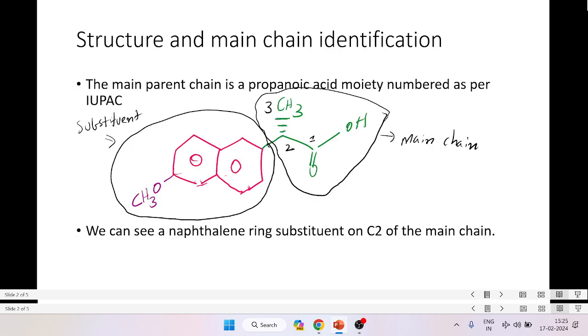So let us look at the structure and identify the main chain. The main parent chain is a propanoic acid moiety, a carboxylic acid moiety, and it is numbered as per the IUPAC. You can see the carboxyl group C double bond OH has got the one number, then the C2, and then the C3 which is the methyl group.